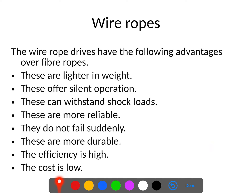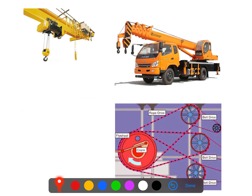The advantages of wire rope drives over fiber rope drives are: they are lighter in weight; they offer silent operation; they can withstand shock loads; as they are stronger, they are more reliable; they do not fail suddenly, so there are very low chances of sudden failure; they are more durable; efficiency is high; and the cost is comparatively low. These are the advantages seen in various applications of wire rope drives.